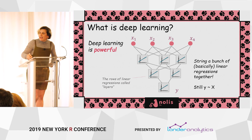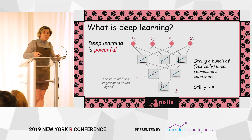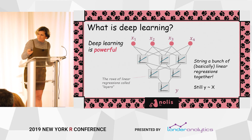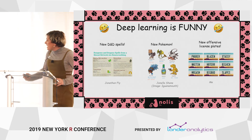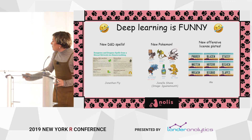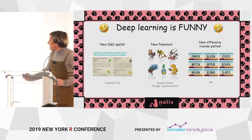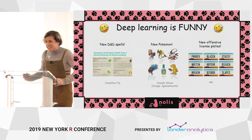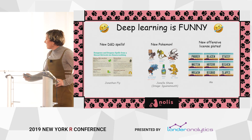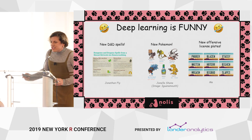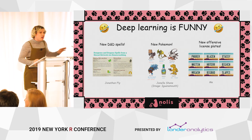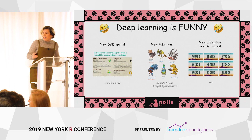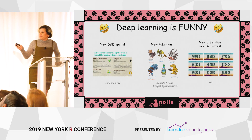You can think about deep learning in many ways the exact same way you think about linear regression. In a linear regression you do some stuff to fit that line; in deep learning you do a lot more, but as someone using it you don't have to think too much about that. Deep learning is also funny — someone used it to generate new D&D spells, someone made new Pokémon names, and someone did a FOIA request on Arizona to get banned license plates and generated new offensive ones. That person was me.